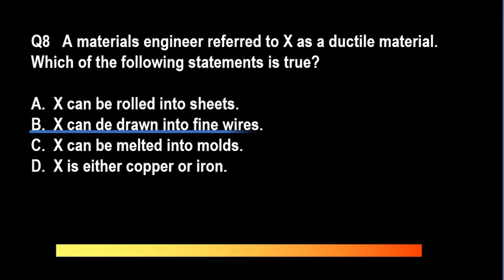The correct answer is letter B. Ductility is the physical property of a substance or material that pertains to the ability to be hammered or drawn into wires without breaking. A is incorrect because it refers to another property of matter, which is that of malleability. D is also incorrect because copper and iron are not the only ductile materials. Other ductile materials are gold, silver, erbium, terbium, and samarium.